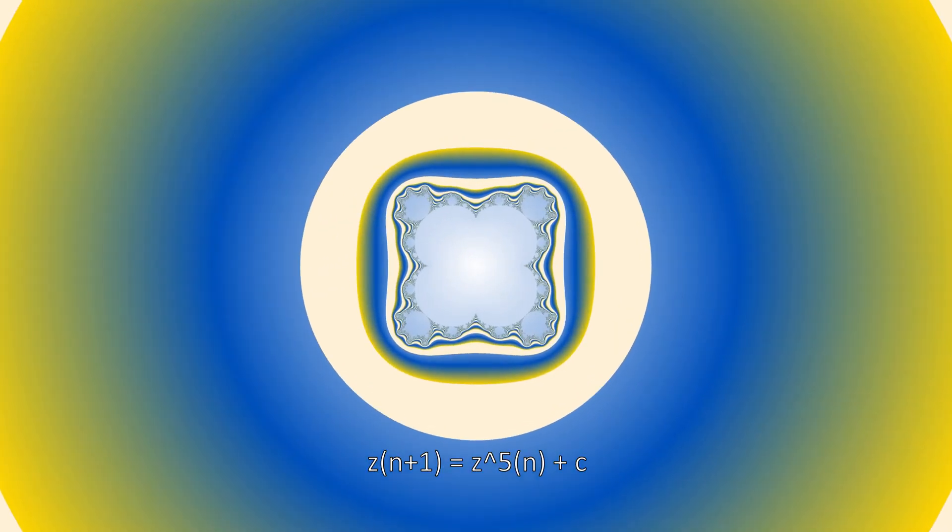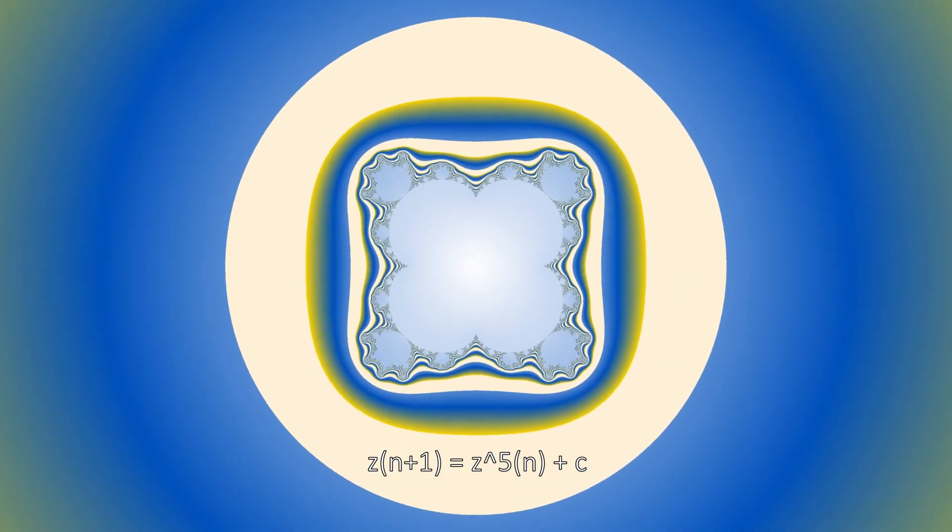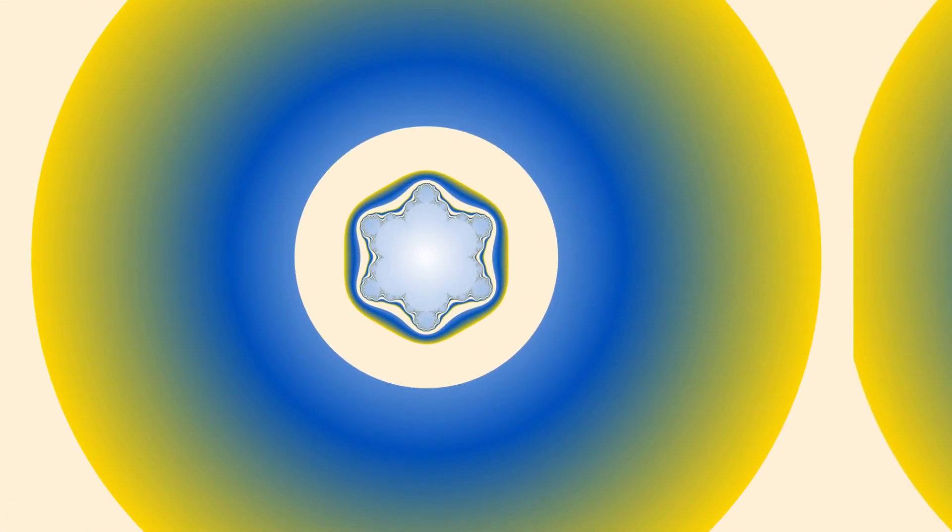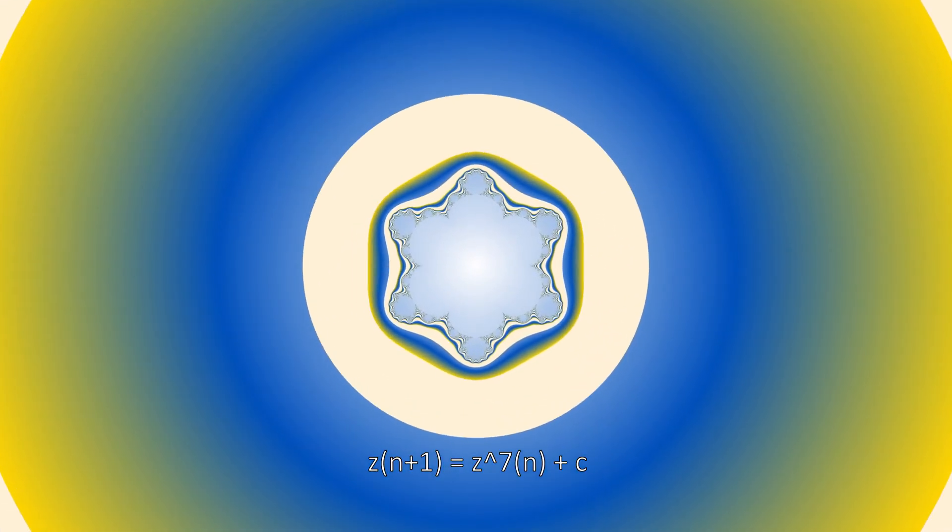Next comes, you guessed it, the multibrot 5, which has the shape of a rounded square. For the sixth one I selected the multibrot 7 with its hexagonal or six-pointed star shape.